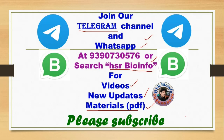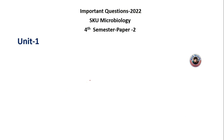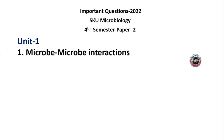Let's check the class topics. In the first unit, the first important question is microbe and microbe interactions. This is very important because there are interactions with each other — mutualism, commensalism, etc. You will be able to provide a long answer and short answer.